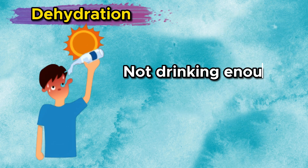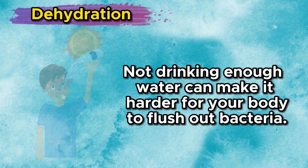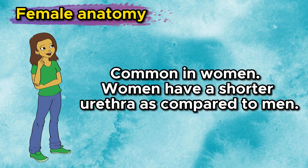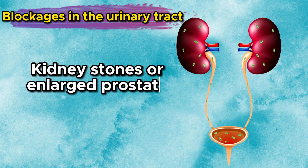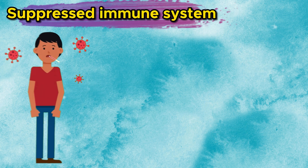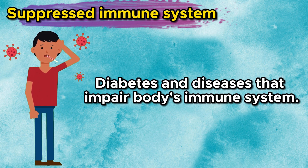Dehydration — not drinking enough water can make it harder for your body to flush out bacteria. Female anatomy — UTIs are common in women, as women have a shorter urethra compared to men. Blockages in the urinary tract — kidney stones or an enlarged prostate can trap urine in the bladder, increasing the risk of UTIs. Suppressed immune system — diabetes and other diseases can impair the body's immune system, which can also increase the risk of UTIs.